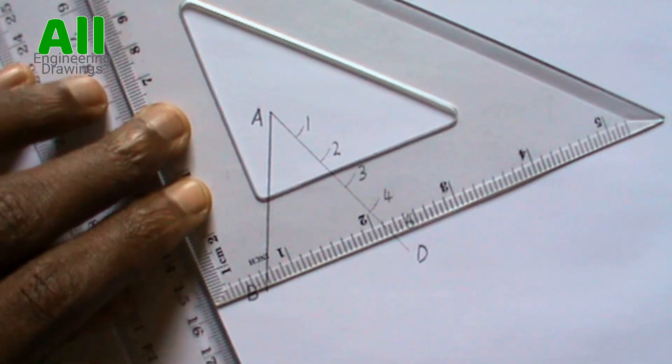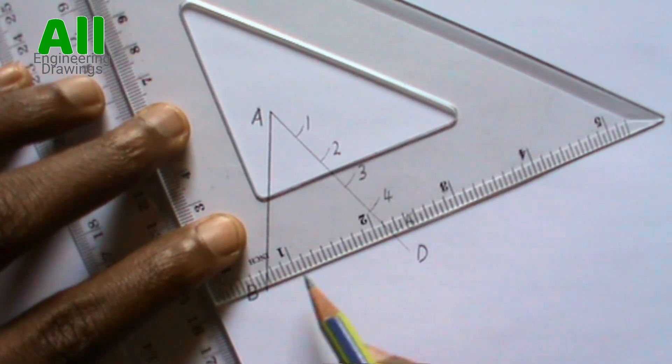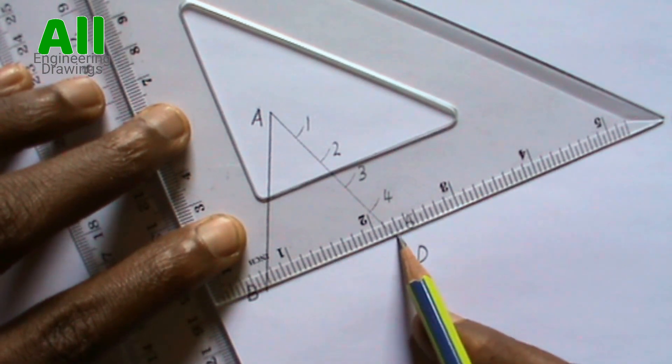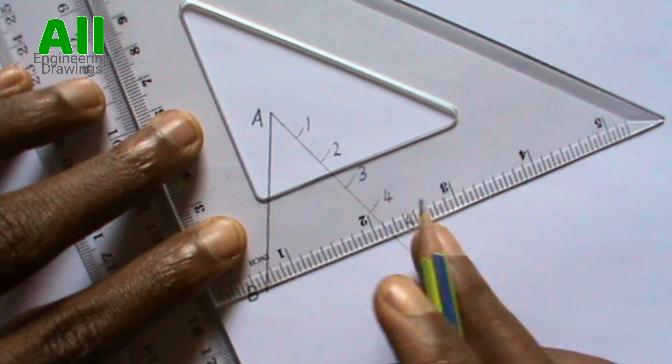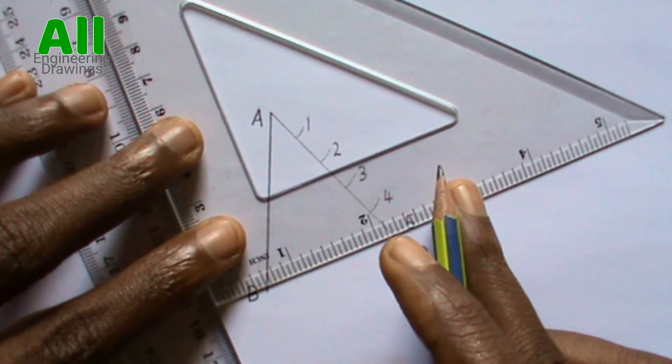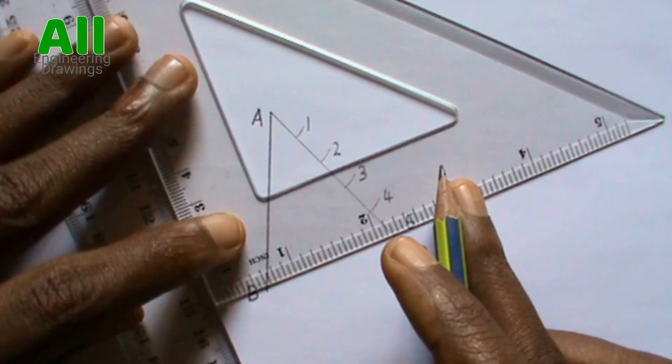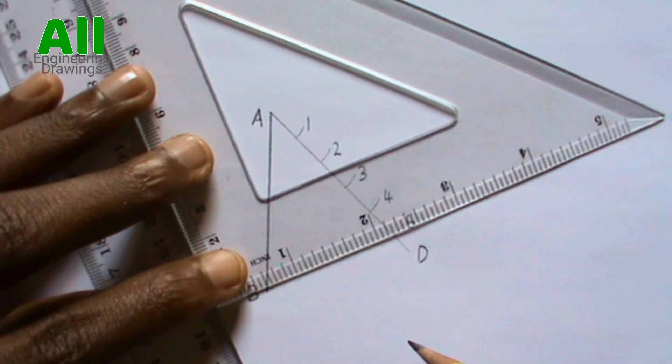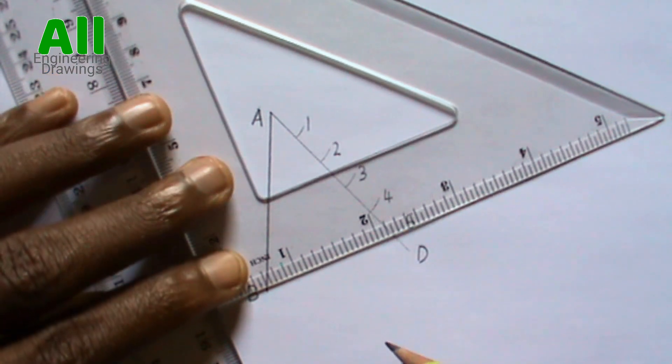Your ruler and set square should be placed in such a way that this side of your set square will pass through point B and point 5. Then draw a line passing through point B and point 5.